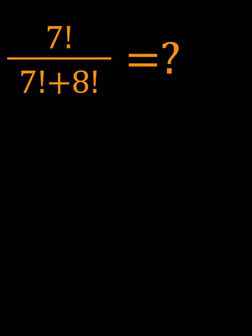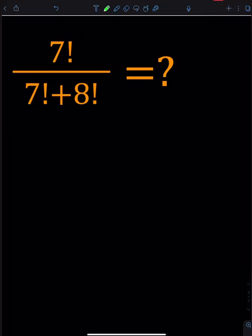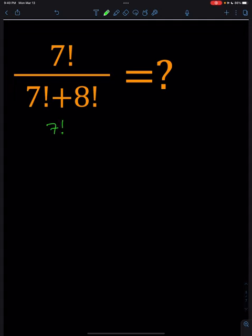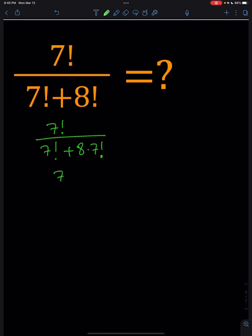We're going to simplify this factorial equation. 7 factorial is the smaller factorial, so let's go ahead and expand 8 factorial and write it as 8 times 7 factorial. 7 factorial is a common factor in the denominator, so we can go ahead and take it out, and inside the parentheses we get 1 plus 8.